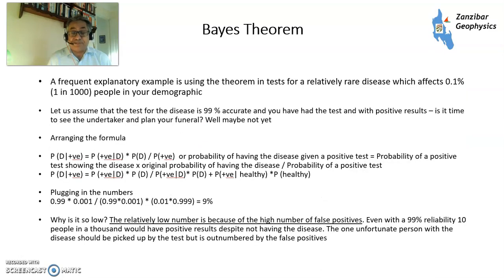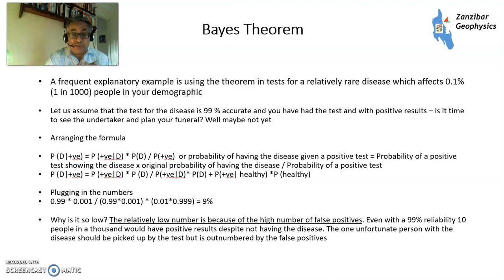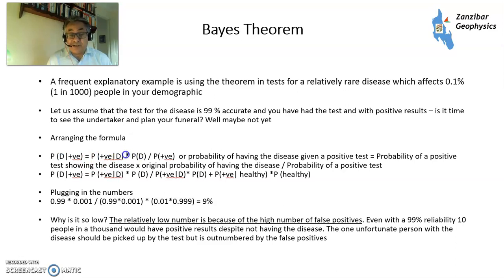One such field is medical diagnostics. Let's say you have been tested for a relatively rare disease that affects one in a thousand people, and you've got a positive result. How scared should you be — do you need to see the undertaker right now and plan your funeral? Well, maybe not yet. Rearranging the formula: the probability of disease given a positive test is the probability of a positive test given that you have the disease — i.e., the accuracy of the test — times the probability of having the disease in the first place, divided by the probability of having a positive test.